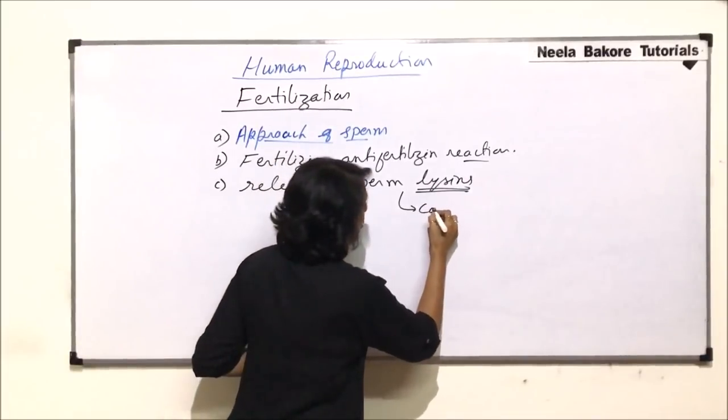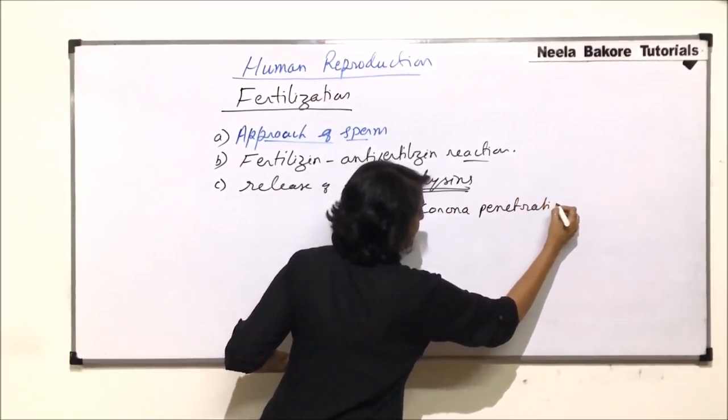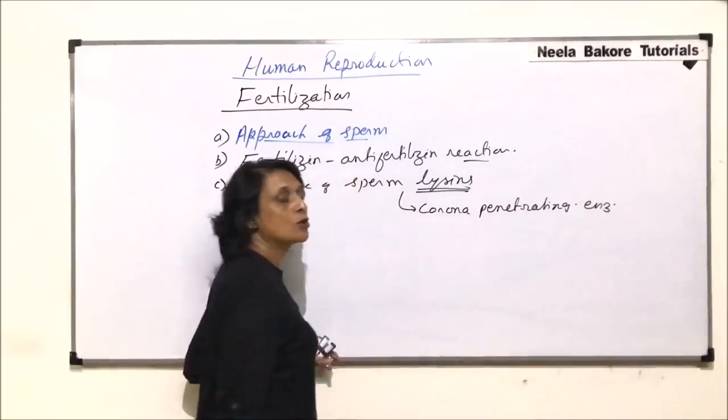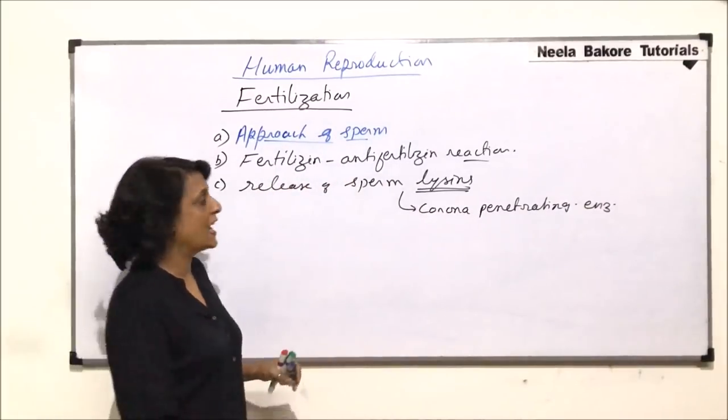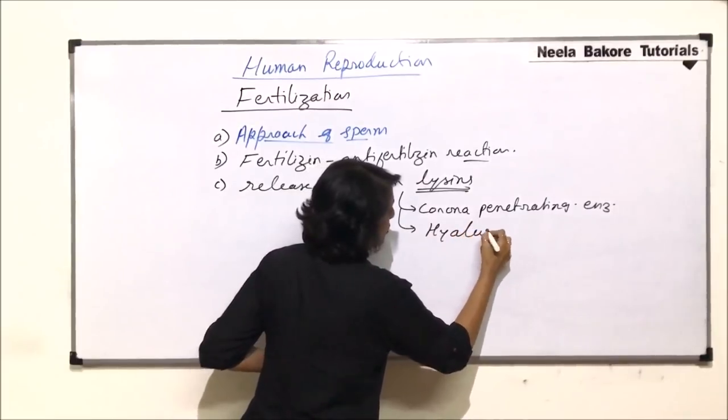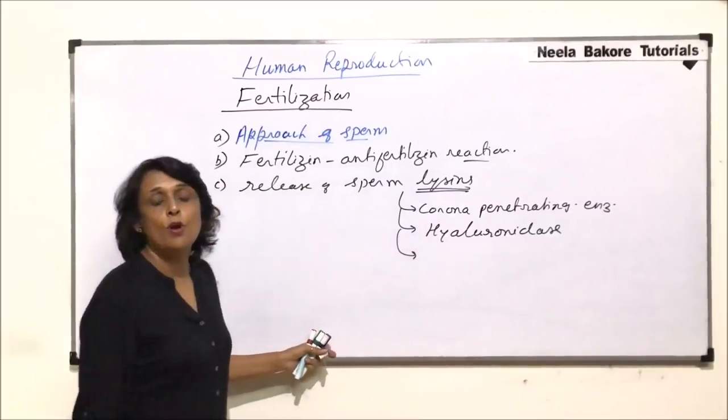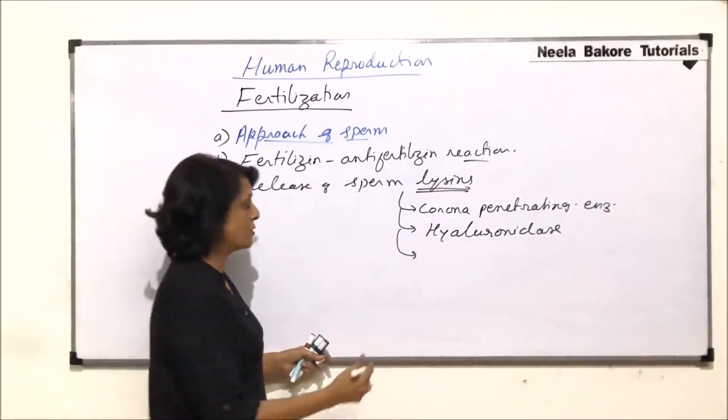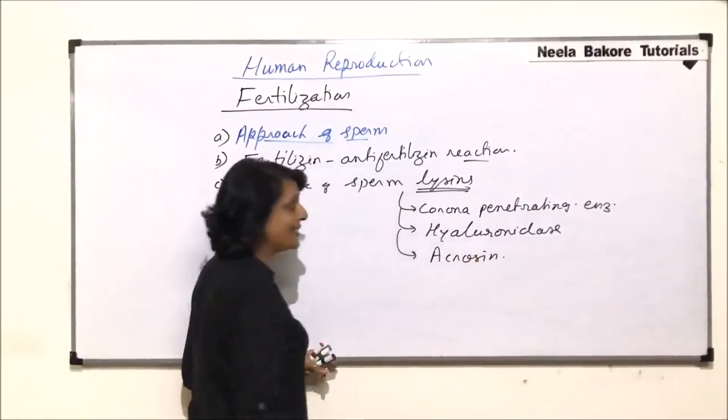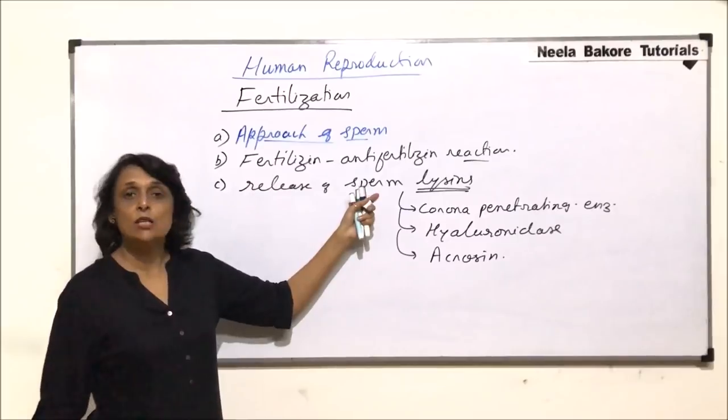First, corona-penetrating enzyme and sometimes it is also written as corona-digesting enzyme. The second one is hyaluronidase. And third is going to dissolve the zona pellucida. It is called acrosin. So these 3 are released. Together, they are known as sperm lyses.